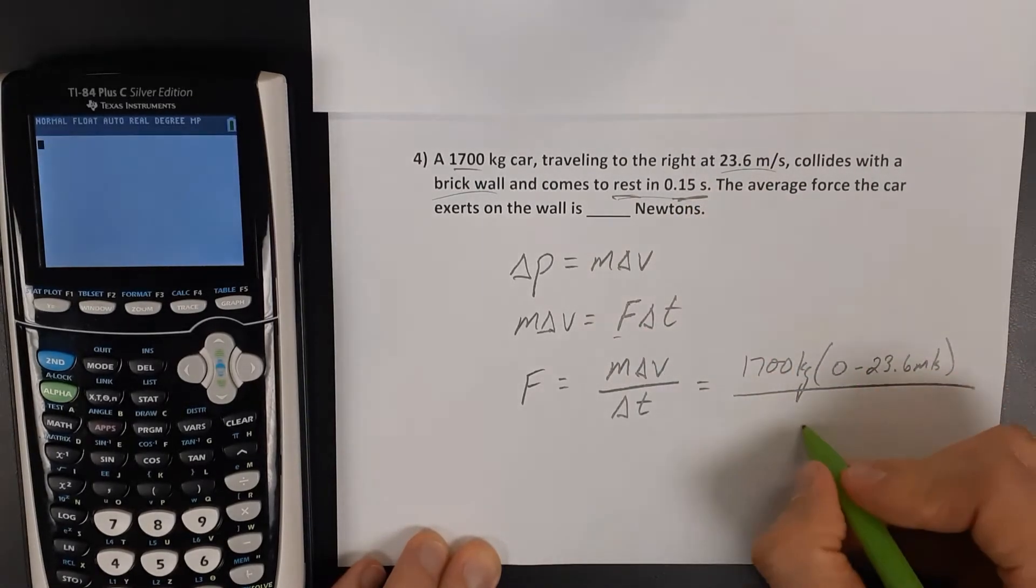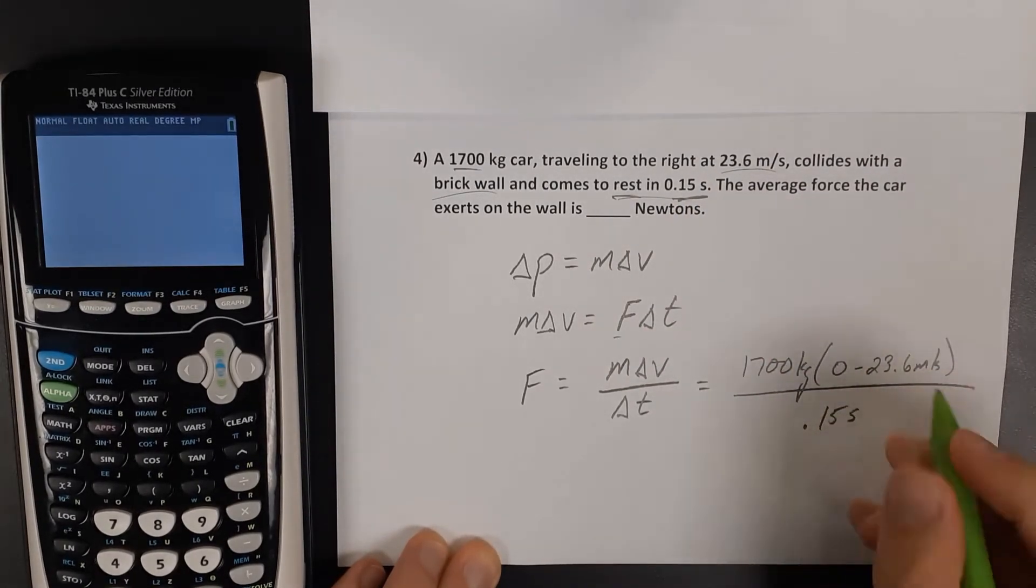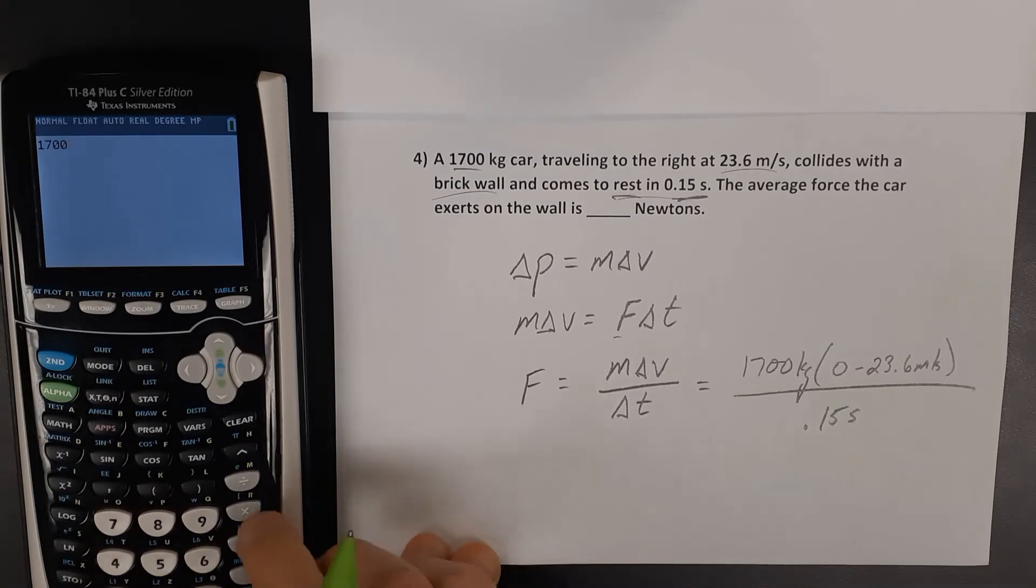All of that happened in 0.15 seconds. So 1700 times negative 23.6 divided by 0.15.